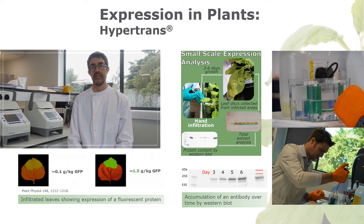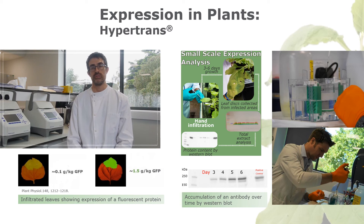This can vary from protein to protein depending on its own intrinsic properties, but we typically harvest material six days post infiltration. In this example, we see the fluorescence of GFP accumulated in the leaf tissue shining under UV light at different yields. Harvesting simply means taking the infiltrated leaves from the plant and freezing them, ready for the downstream processing.